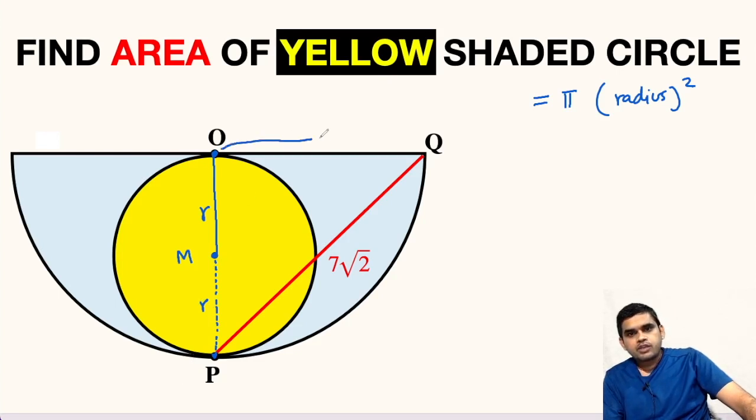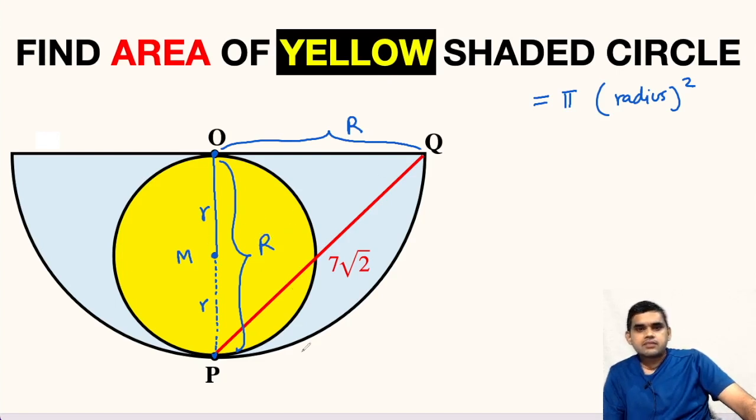Here OQ, let us assume as capital R, the radius of this semicircle. If we see here, OP will also be the radius of this semicircle. We get a relationship between capital R and small r.